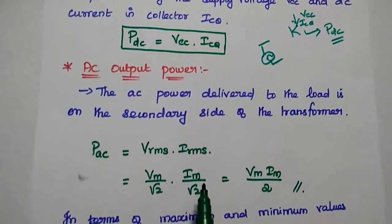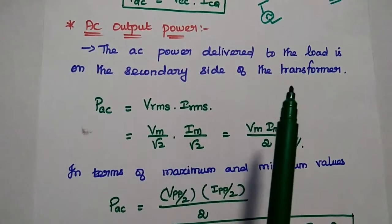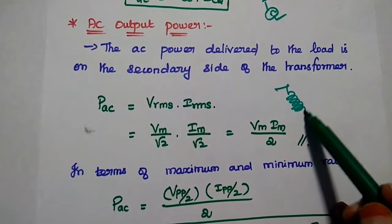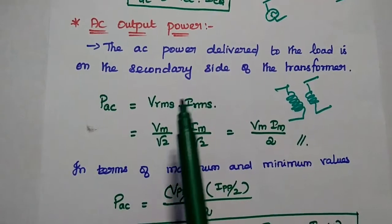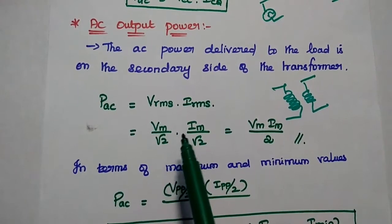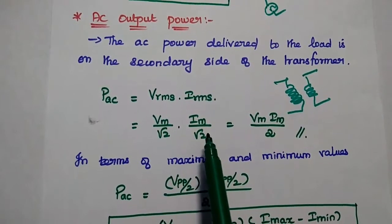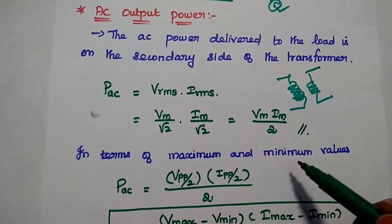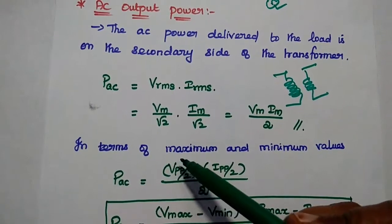Next, we are going to give the AC input signal. In that case, we can get AC output power. The AC power delivered to the load is on the secondary side of the transformer. We are using a step down transformer, where the secondary winding turns are less than the primary. The AC power is equal to VRMS into IRMS, that is root mean square values. It can be obtained as Vm by square root 2, into Im by square root 2, where Vm represents the maximum voltage and Im represents the maximum current. Then, the AC output power is equal to Vm × Im by 2. In terms of maximum and minimum values, Vm is equal to peak-to-peak voltage divided by 2.